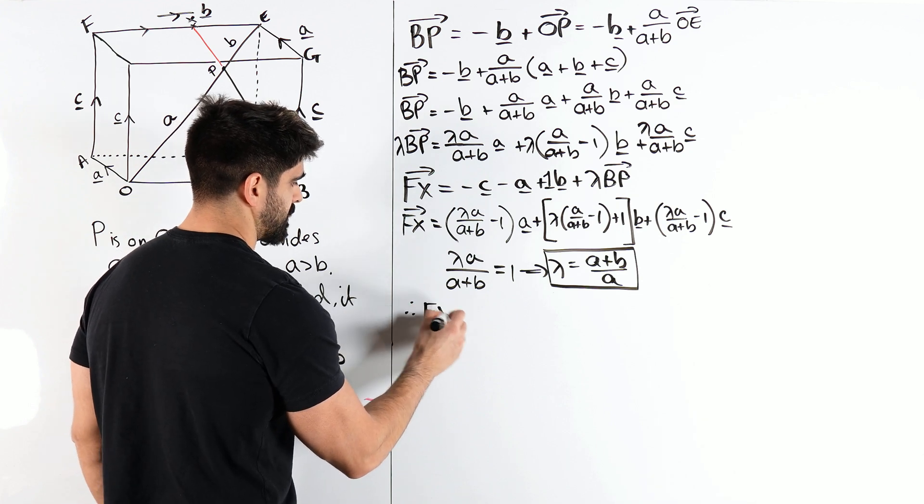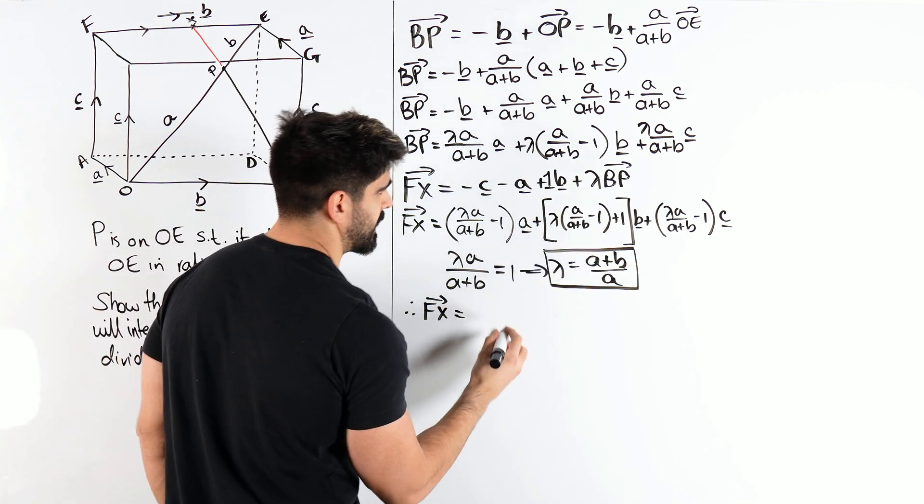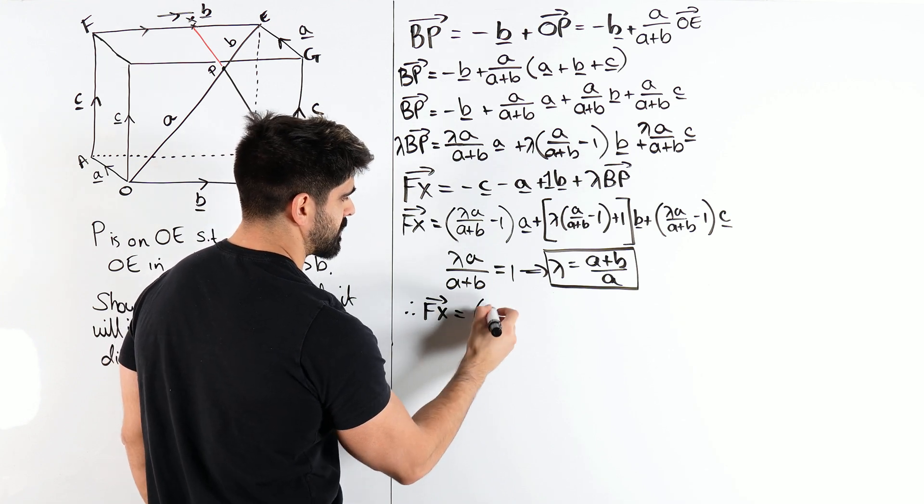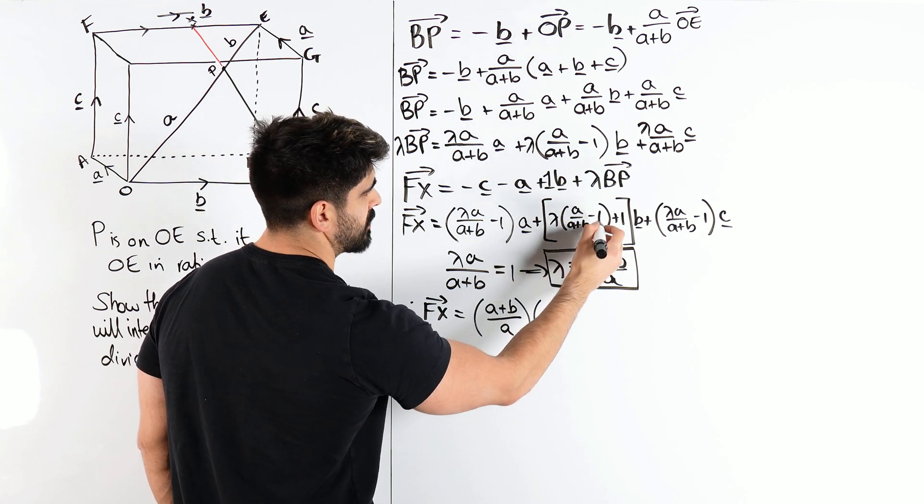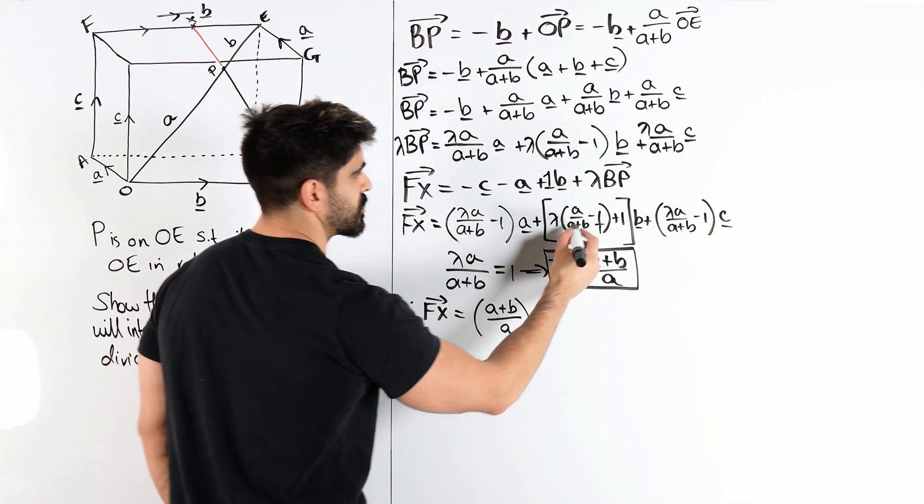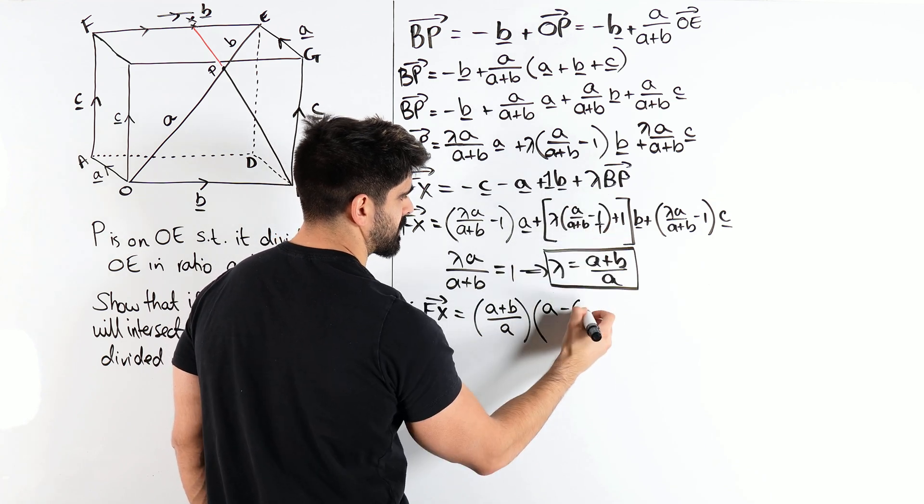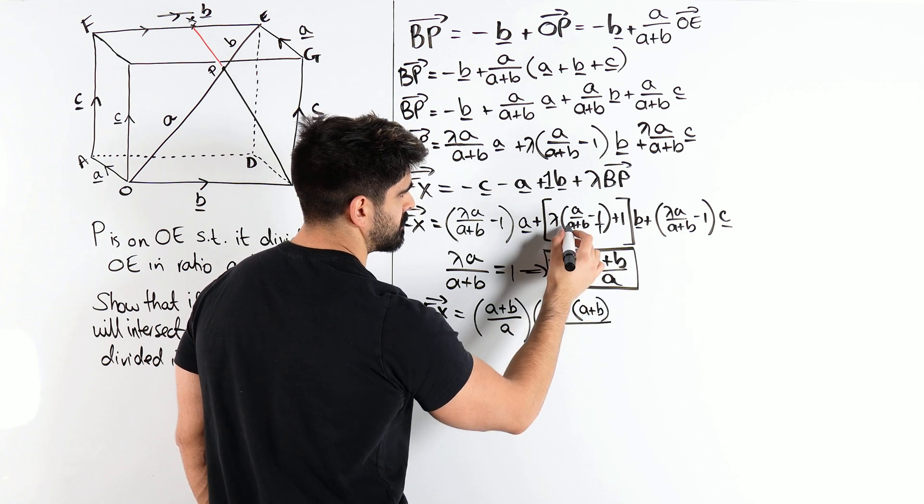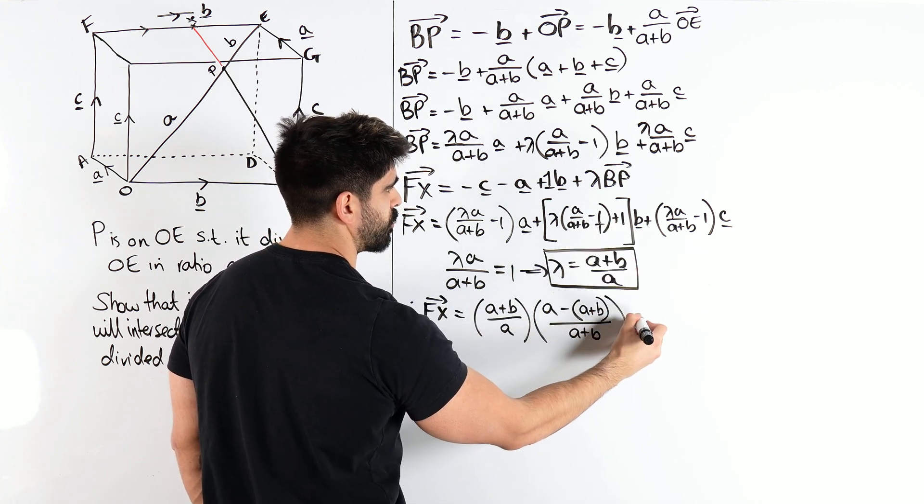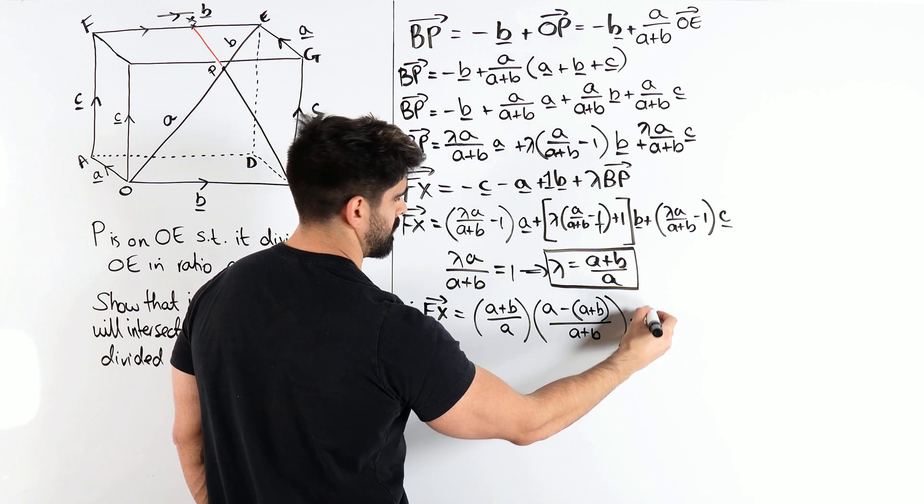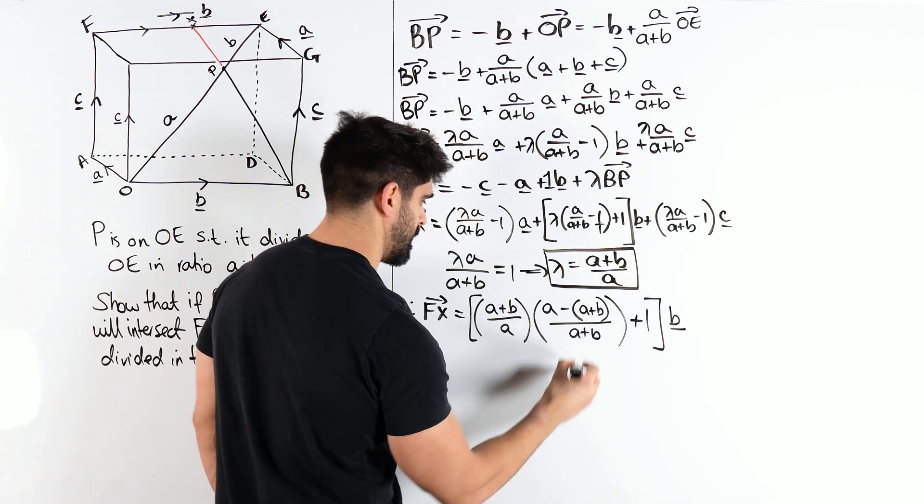So, therefore, FX is going to be, well, subbing that in. Things don't cancel yet. So, we have lambda times all of this. Now, I think what I'm going to do is I'm going to bring that all into one fraction. So, cross multiplying, I have A minus this A plus B all over A plus B, which is nice because these A plus Bs are going to cancel. And then we have plus 1 at the end and then B. Cancel.